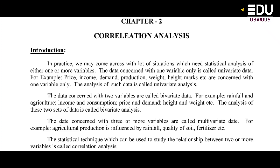For example, agricultural production is influenced by rainfall, quality of soil, fertilizer, etc. — these are three or more variables. The statistical technique which can be used to study the relationship between two or more variables is called correlation analysis.